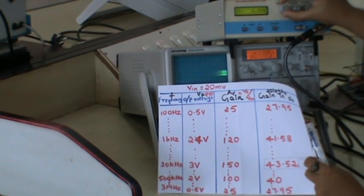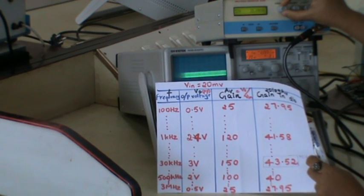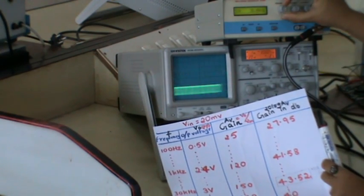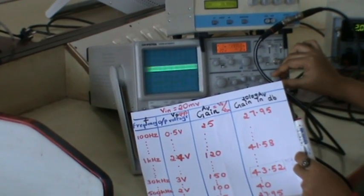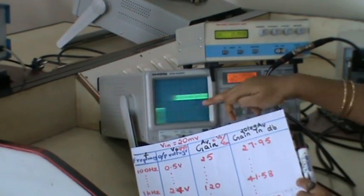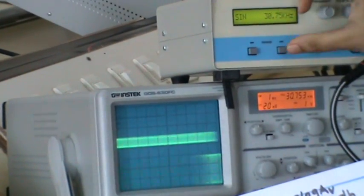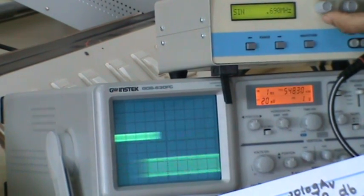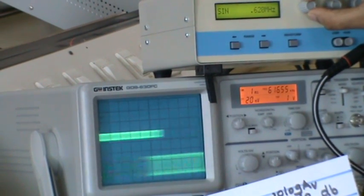As frequency increases in steps, I will say 2 kilo hertz, 3 kilo hertz, around 20, 30 kilo hertz. We can see it at 30 kilo hertz. It is around 3 volt. You can see it here in the output waveform. And by varying the frequency still, at around 500 kilo hertz, the voltage is getting reduced.